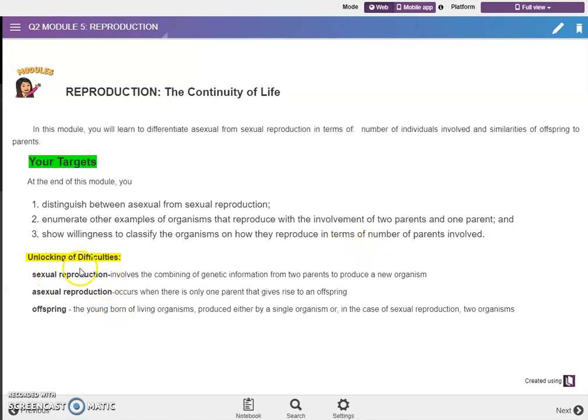All right, so we have also here the unlocking of difficulties. The words like sexual reproduction, what does it mean? Asexual reproduction, what does it mean? And offspring.